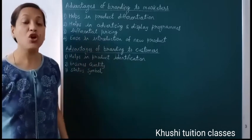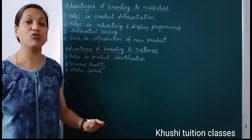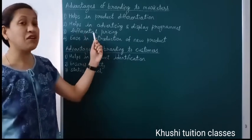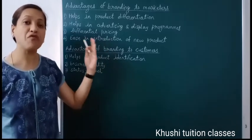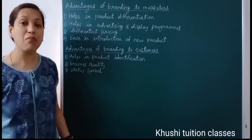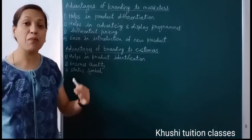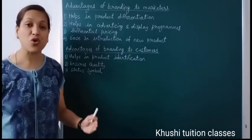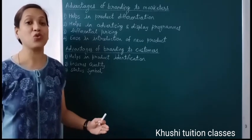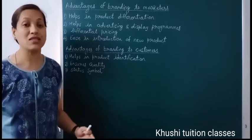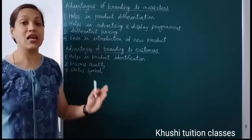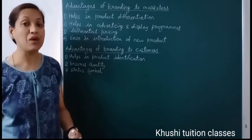The third is differential pricing — for a brand that is well established in the market, the marketer can set higher prices, and consumers prefer it too. So there may be a price difference between competitors' products because of branding. The fourth is introduction of new products — when a brand becomes established, the marketer introduces other products under the same brand name, reducing advertisement costs and gaining faster consumer acceptance. For example, with Maggi brand came Maggi noodles, Maggi soup, Maggi sauces, and Maggi masala. Similarly, Nestle India introduced Nescafe Classic and Nescafe Sunrise Premium.